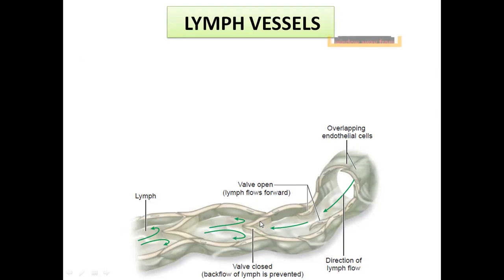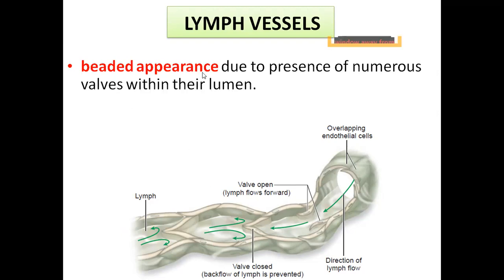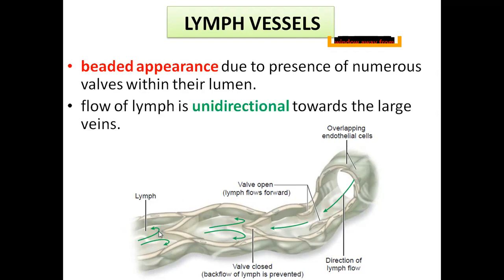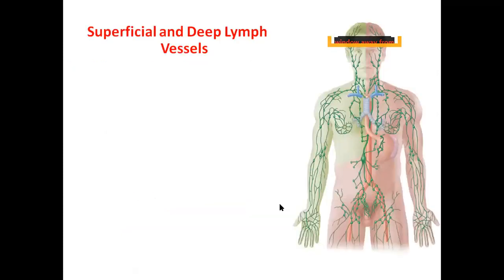Lymph vessels have a beaded appearance due to the presence of numerous valves within their lumen. The flow of lymph is unidirectional towards large veins. We have superficial lymph vessels and deep lymph vessels, based on which we classify lymphatic drainage into superficial and deep groups of lymph nodes.